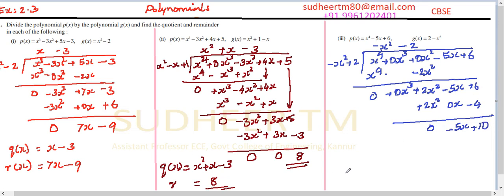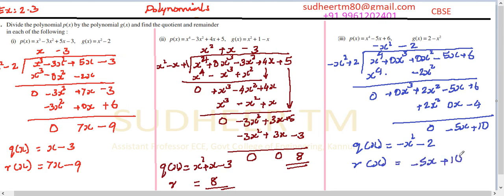We have completed our division. The answer is q(x) = minus x² minus 2 and r(x) = minus 5x plus 10. So these are our answers.